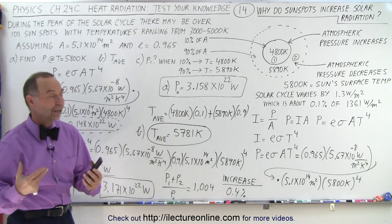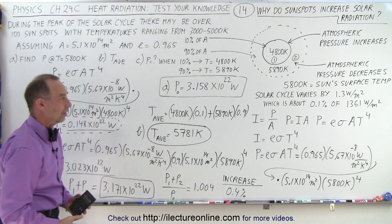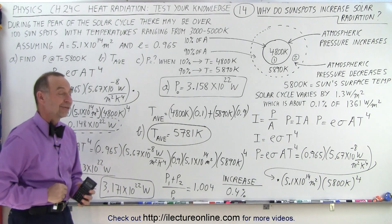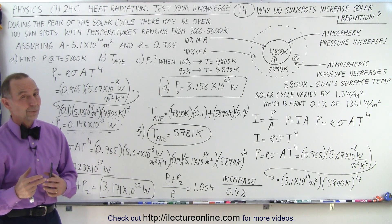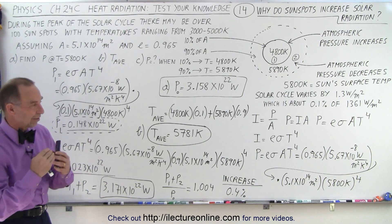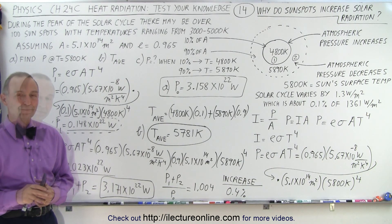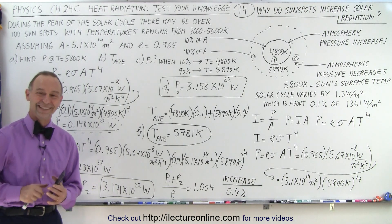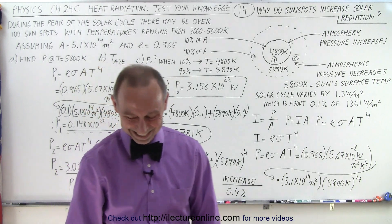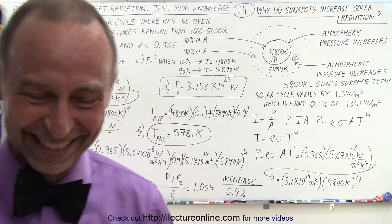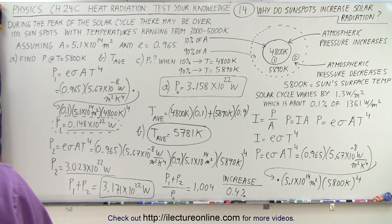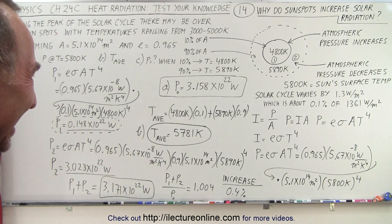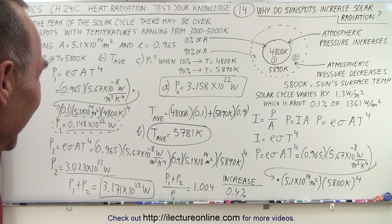Therefore it's not unusual to see about a 0.1 percent increase in overall solar irradiance during high solar activity with around 100 sunspots on the surface. That is how we know that at the peak of the solar cycle we have a little bit more sunshine and it gets a little bit warmer — mystery solved. It is definitely counterintuitive.